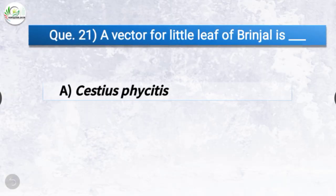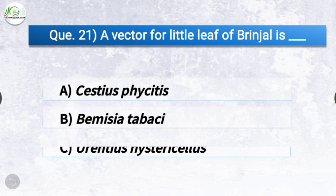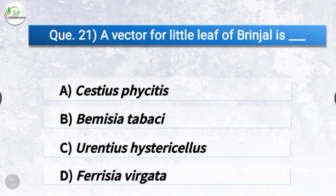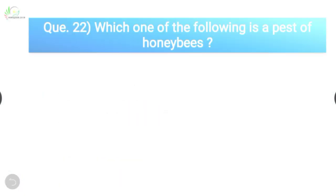Question number twenty-one: A vector for little leaf of brinjal is dash. The correct answer is option A, Cestius phycitis, which is brown plant hopper — a vector for little leaf of brinjal is Cestius phycitis.